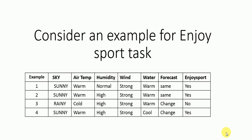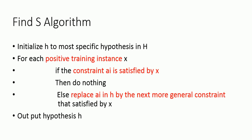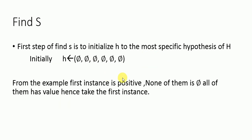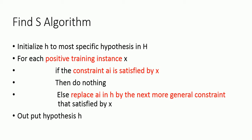The Find-S algorithm says: initialize h to the most specific hypothesis. For each training instance x, if it is positive, check if the constraint a of y is satisfied by x. If the constraint is satisfied, do nothing; else replace a of y with the next more generic value.